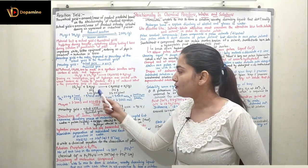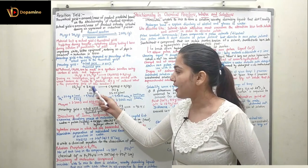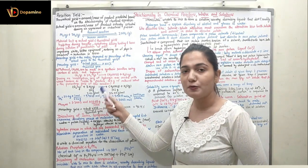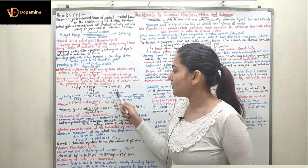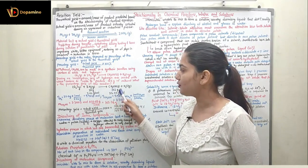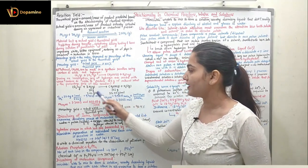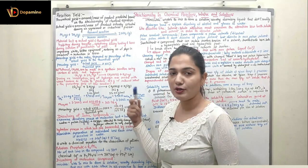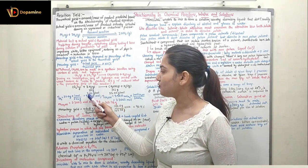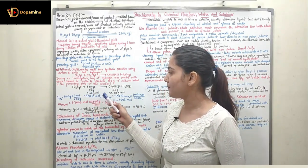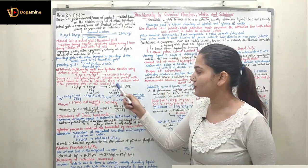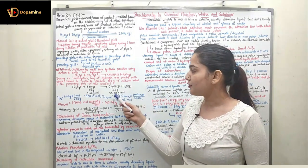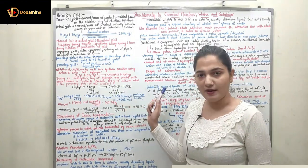The actual yield is 102 grams. Now we find the molecular mass of H2, which is 2.02 g/mol, and the molecular mass of CH3OH, which is 32.05 g/mol. From the molecular masses, we can find the number of moles.